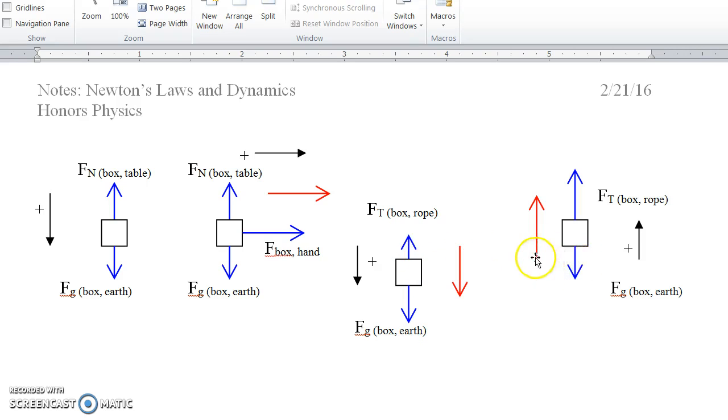Lastly, we have this box being accelerated upwards. It has an acceleration arrow upwards right here. We have the rope, the force on the box due to the rope pulling it up, and we have the gravity once again pulling it down. The fact that it's accelerating upwards means that this upwards force has to be greater than this downwards force. I'm trying to show that by showing this force vector arrow as a larger force.